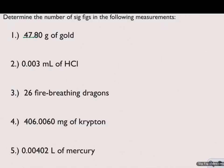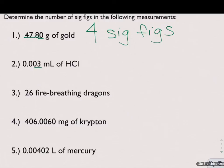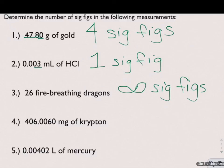Looking at number two, we count our sig figs from the left. Notice the zeros are to the left of the non-zero number and are not between two sig figs — none of these zeros are significant. Therefore we have one sig fig in this measurement. Number three is a counted number and has infinite sig figs. Pause the video here and round number three. You should have determined that this measurement — fire-breathing dragons — will always give exactly 26. Pause the video here and count the sig figs in numbers 4 and 5, making sure to use the rules provided on the previous slides.